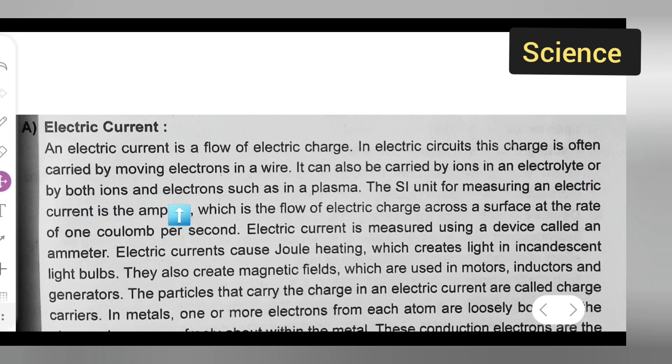The SI unit for measuring an electric current is the ampere, which is the flow of electric charge across a surface at the rate of one coulomb per second. Electric current is measured using a device called an ammeter.